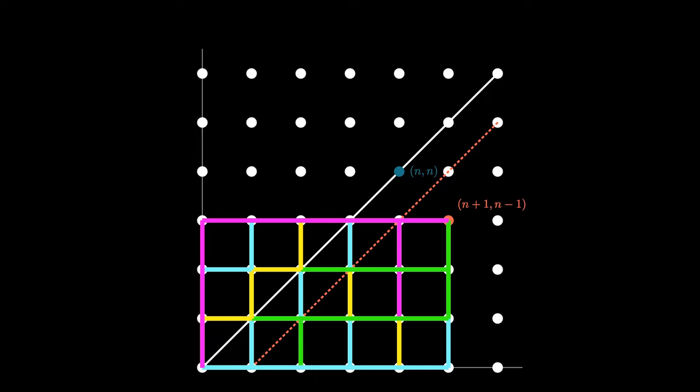Because the reflection process is invertible, we see there's a one-to-one correspondence between the bad paths traveling to (n,n) and all of the paths traveling to (n+1, n-1).